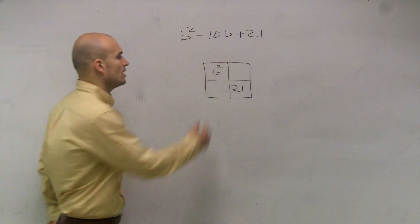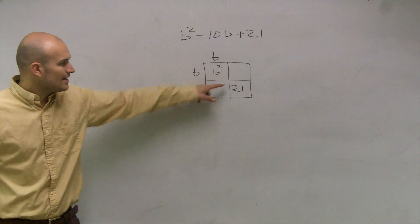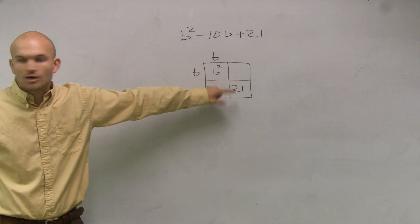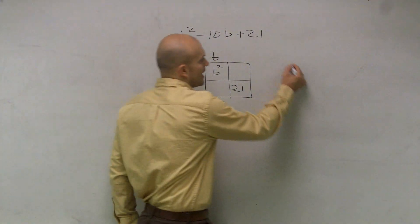Well, I know that b times b is going to give me that upper quadrant. I don't know what times 21 is going to be though, because I don't know what I can fill in for these boxes. That's why we use our x.